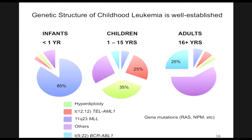Today the genetic structure of leukemias are very well understood, and we find that leukemia is actually a collection of diseases. These diseases have different genetic structures by the age of the children. So in infants, we see that most infants have leukemias with MLL translocations — that's the blue 11q23 MLL group here. Children tend to have hyperdiploidy leukemias — these are leukemias with five or more extra chromosomes — and 12;21 tel-AML translocated leukemias. Adults have different genetic aberrations.